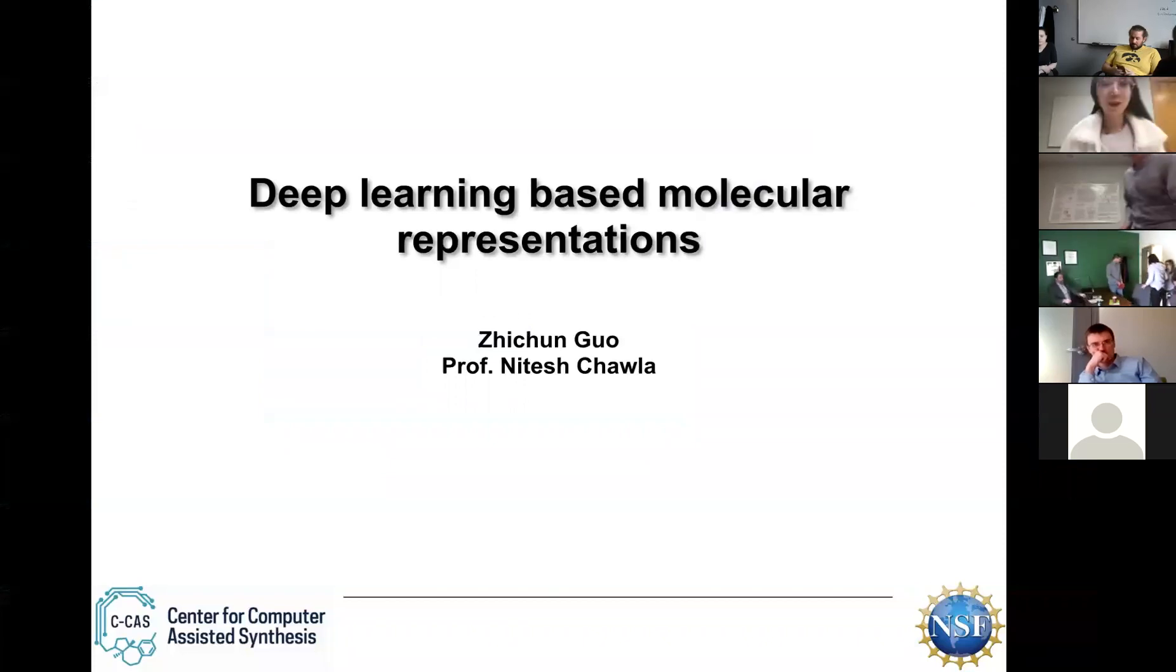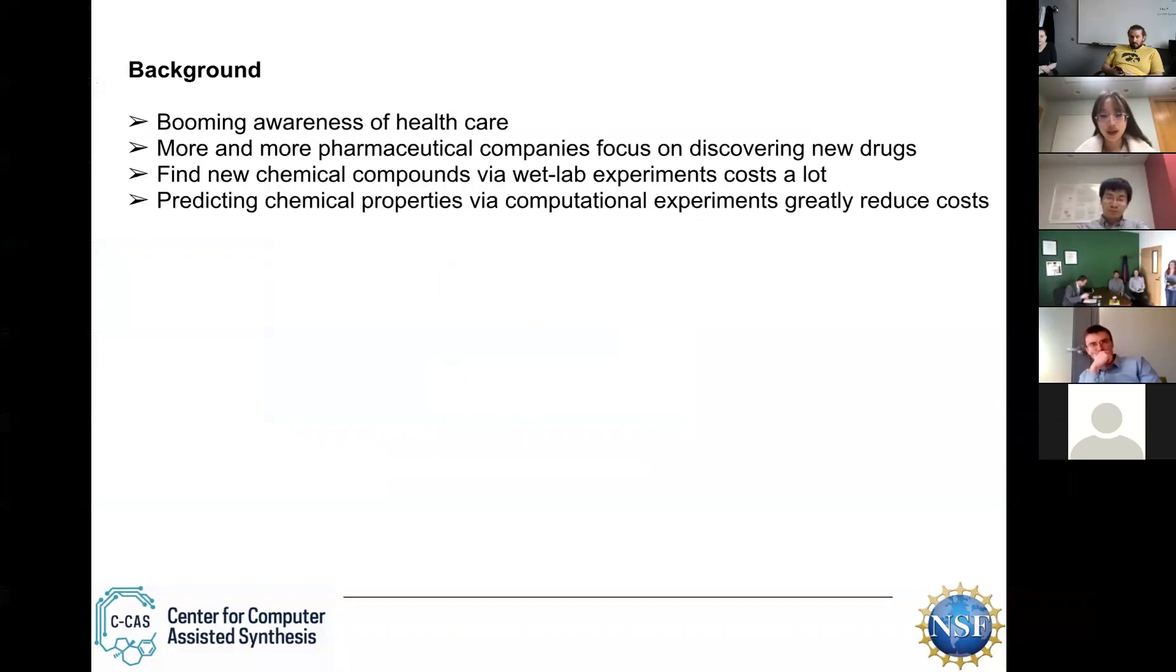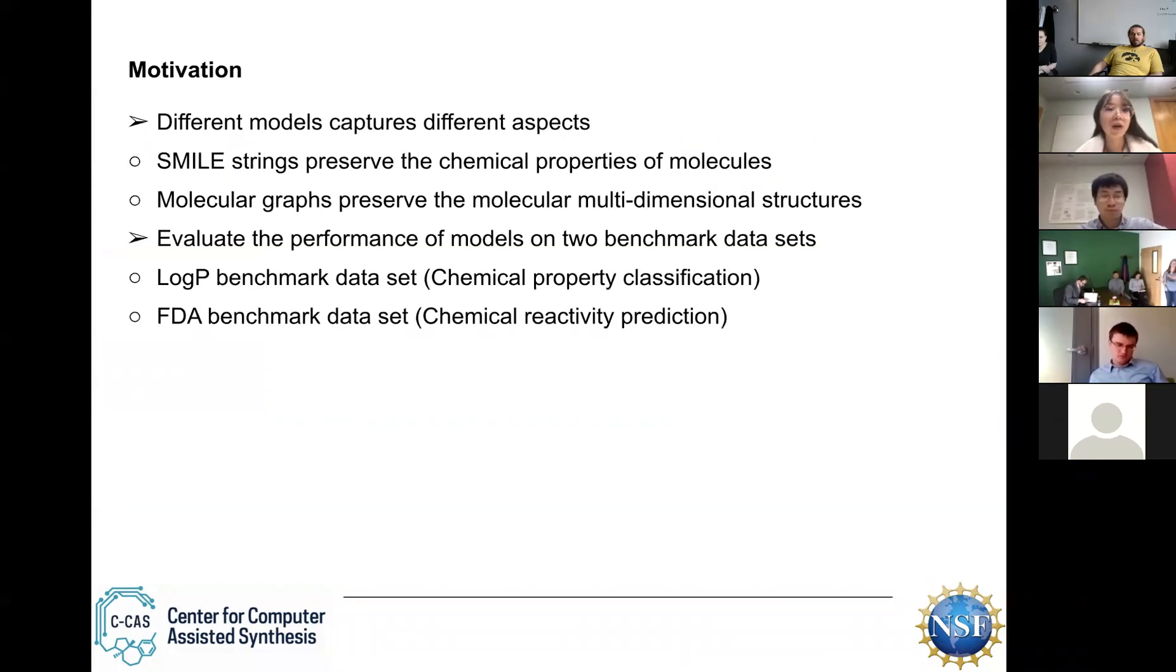I will show my work quickly. I'm doing deep learning based on molecular representations. What I'm doing is to predict chemical properties using computational experiments to reduce the costs. My motivation is to use different models to capture different aspects using the SMILES strings and also molecular graphs.